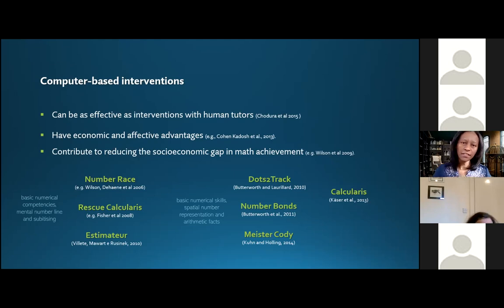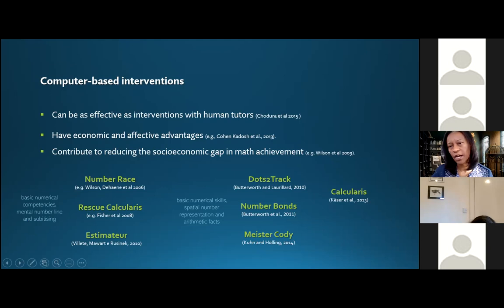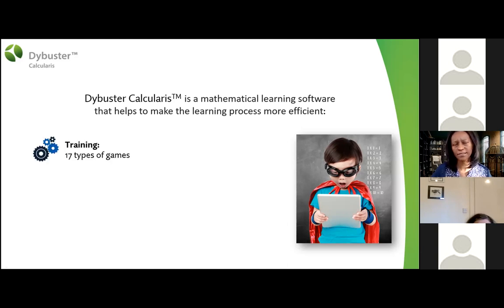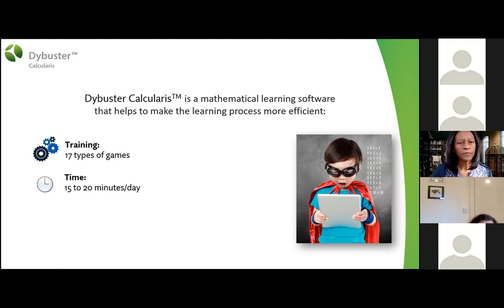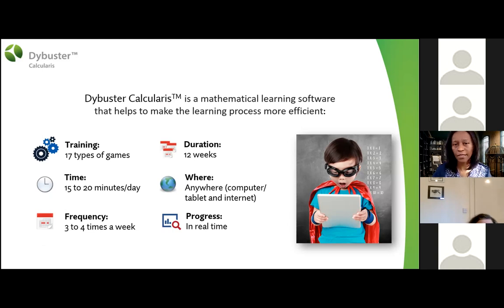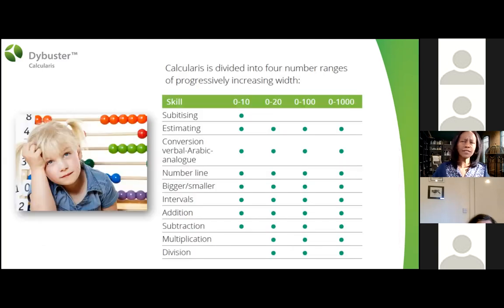In the case of computer-based interventions, we know they can be as effective as interventions with human tutors, with economic and practical advantages, and they contribute to reducing the socio-economic gap in maths achievement. Among several well-known interventions already published, I would like to talk about Calcularis, which is the one we used in our study. Calcularis is a mathematical learning software which helps learning in different ways.